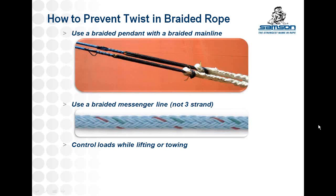Using a braided main line with a braided pendant is a great system that will not twist when loaded. To be sure these lines are not twisted when being handled, it's good practice to use a braided messenger line as well. Even better is to use a braided messenger line with a swivel — if you're reeling in on a capstan or a shipyard uses a three-strand messenger line, you can prevent them from twisting your main lines and pendants. A three-strand messenger line will twist when loaded and can put twists into your main lines and pendants. Careful handling and load control — simply preventing any manual twisting of the line — will also reduce the amount of twist in your working lines.